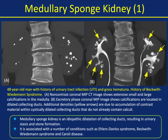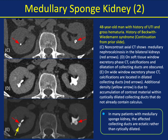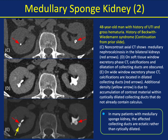Medullary sponge kidney is an idiopathic dilatation of collecting ducts resulting in urinary stasis and stone formation. It's associated with conditions like Ehlers-Danlos, Beckwith-Wiedemann syndrome, and Caroli's disease. Another example: a patient with a history of UTI and gross hematuria. The non-contrast scans show medullary nephrocalcinosis. On soft tissue window, you don't appreciate the change at the interface of the calyces and the stone — the stones look hidden — but with wide windowing you very nicely see the calcifications in the dilated collecting ducts. It should be noted that in many patients with medullary sponge kidney, the affected collecting ducts are ectatic rather than cystically dilated.